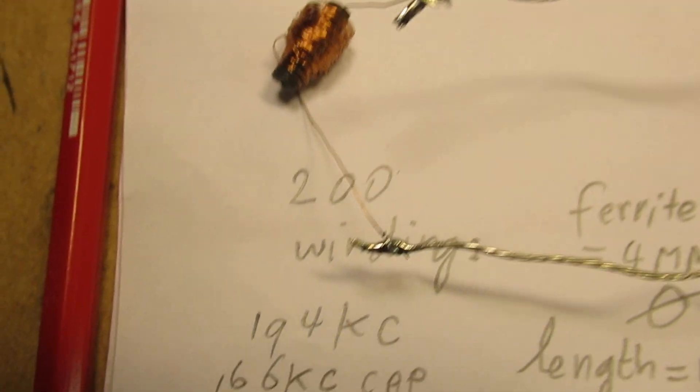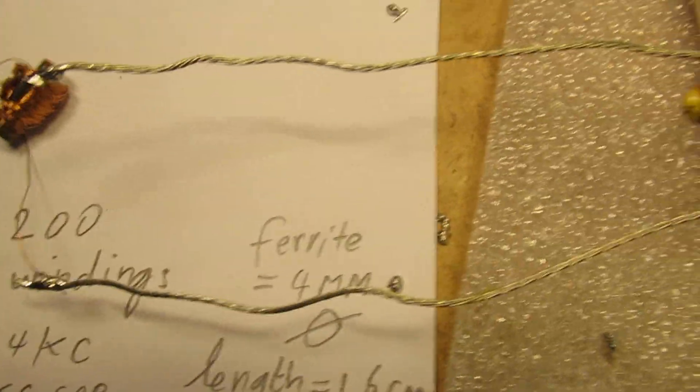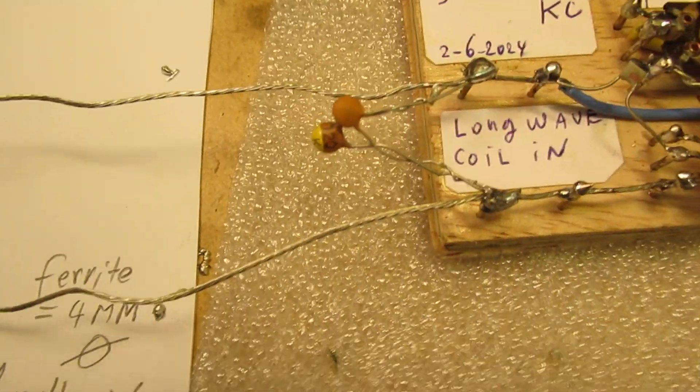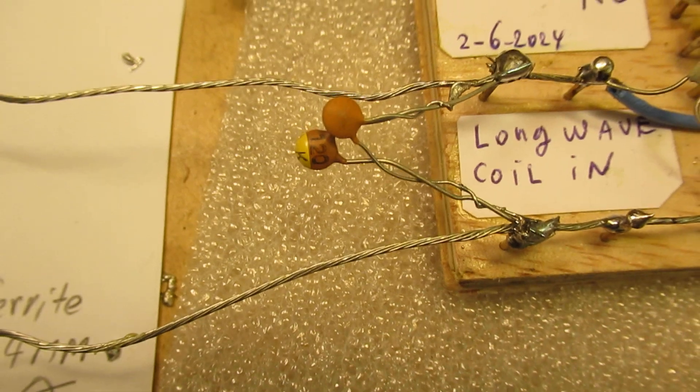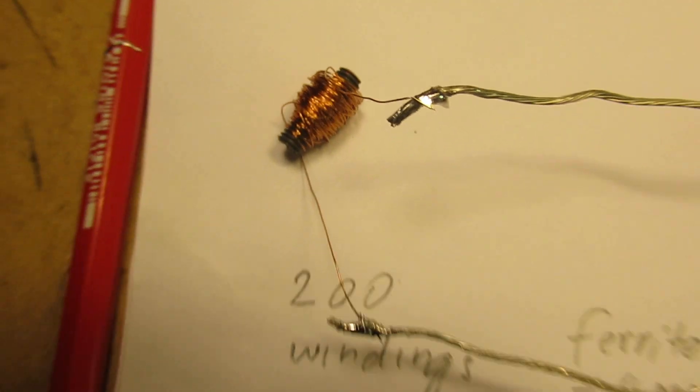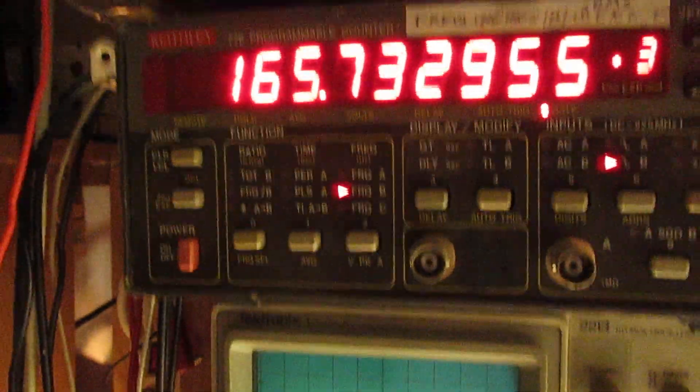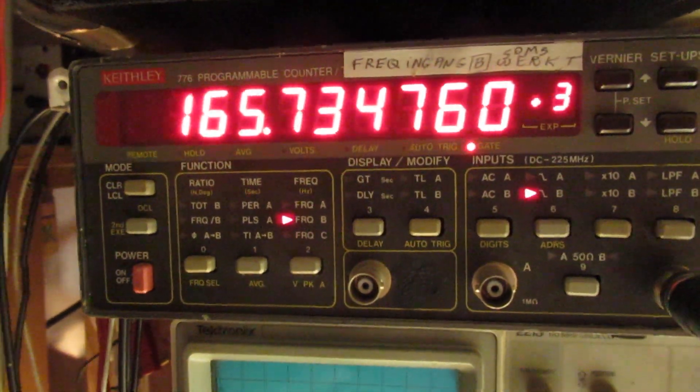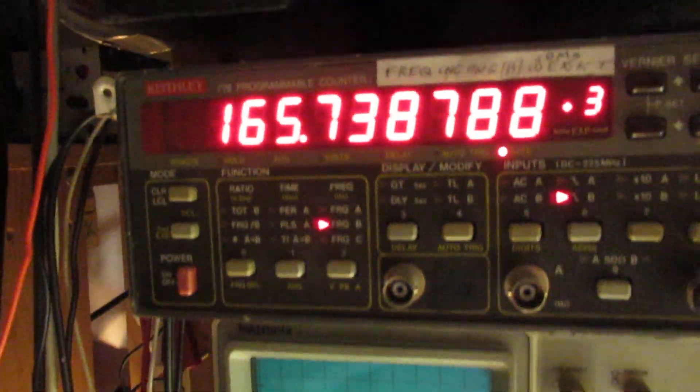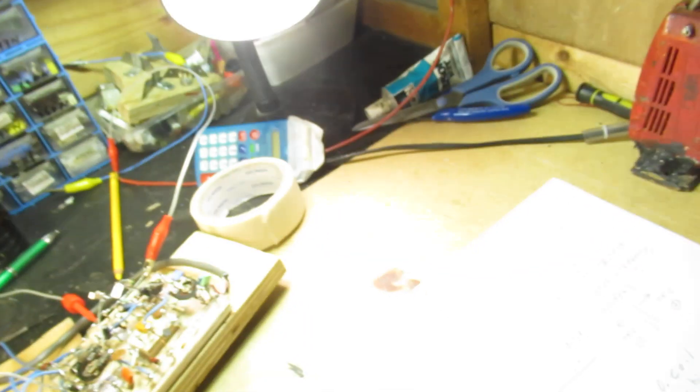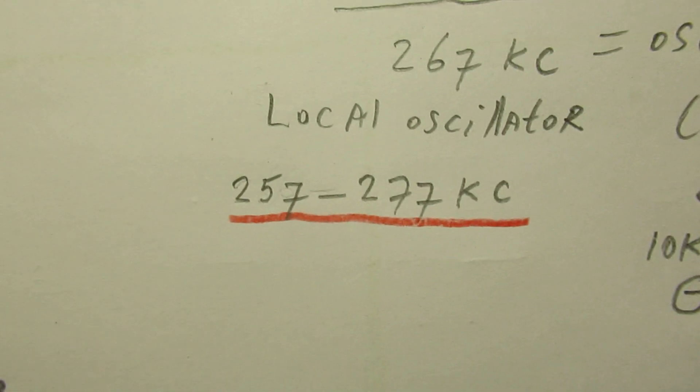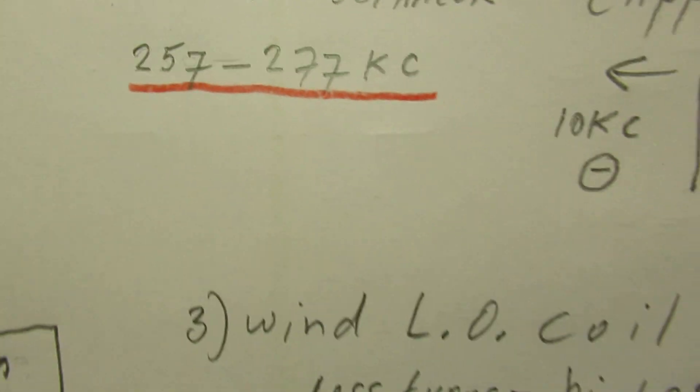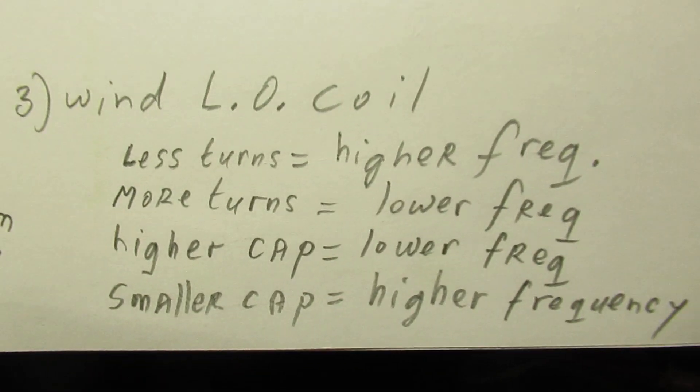Ferrite rod, 200 windings. And I have used here a parallel capacitor of 300 picofarad. And with these 200 windings I have now a frequency of 165 kilohertz. And this is the waveform. And it means, could mean that when I need a local oscillator frequency in this band, I must tune the coil. And these are the principles.